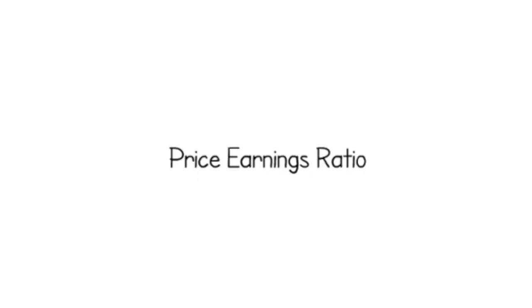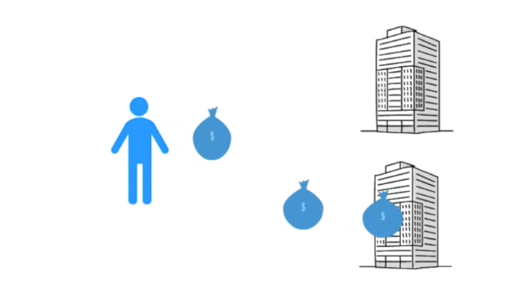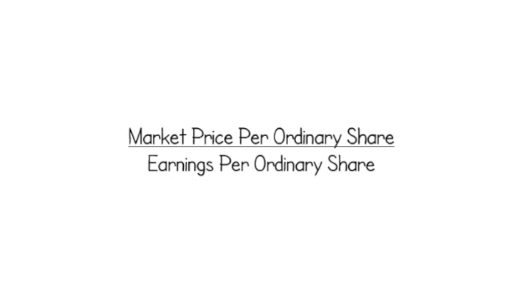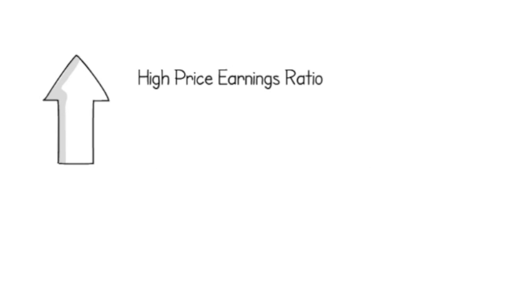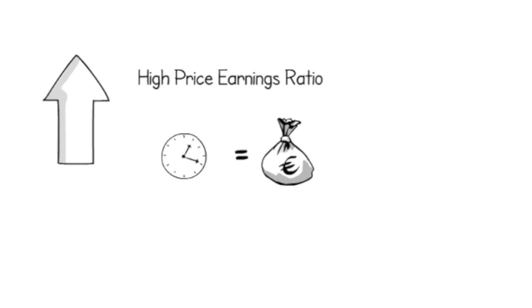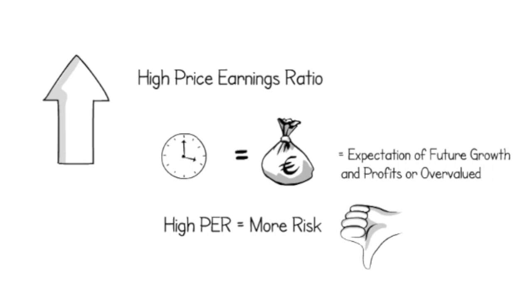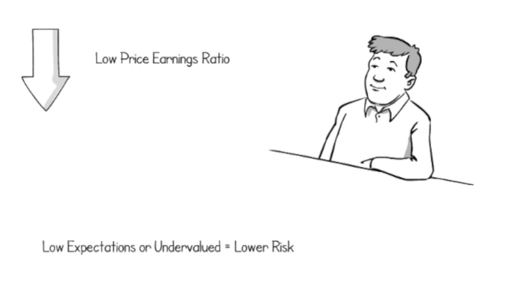Price earnings ratios measure the amount investors are willing to pay for shares. The price earnings ratio is calculated by the market price per ordinary share divided by the earnings per ordinary share. A high price earnings ratio suggests that investors have high expectations for the business's future profitability, or it could have been overvalued. Vice versa, a low price earnings ratio suggests investors have low expectations, or the share price could be viewed as an opportunity and undervalued in the market.